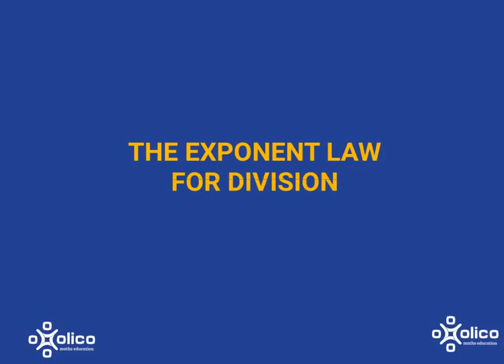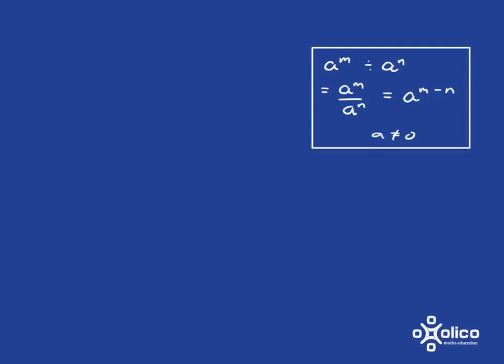Let's have a look at the exponent law for division. Let's do a quick recap of the division rule. A to the m divided by a to the n. Remember we can always rewrite division in fraction form, so a to the m over a to the n, same thing.